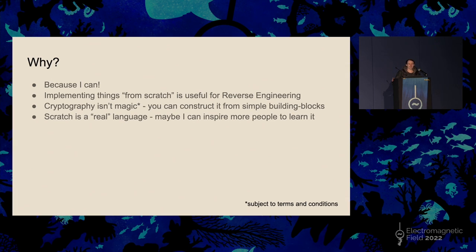As a reverse engineer, it's all about spotting patterns in code to figure out what it's doing. And the only way you can spot a pattern is if you've seen it before. The best way to see it before is to implement the algorithm yourself. So by implementing algorithms from scratch, it improves your reverse engineering skills. Implementing things in Scratch is an added level of difficulty — it means you can't cut any corners. You really have to implement everything from scratch with no cheating using libraries.